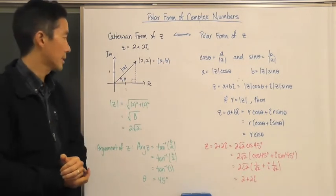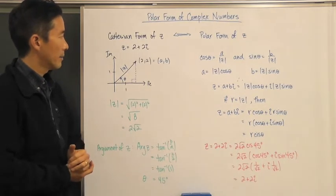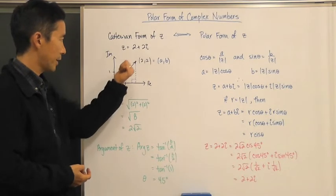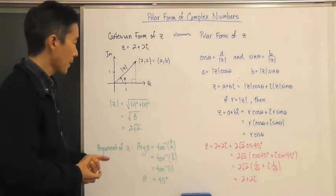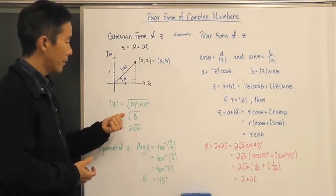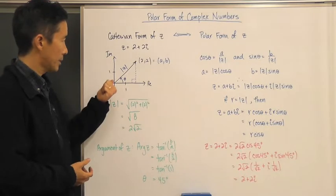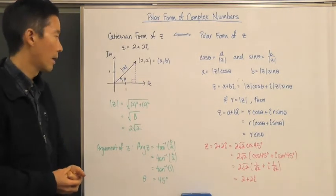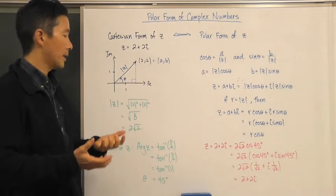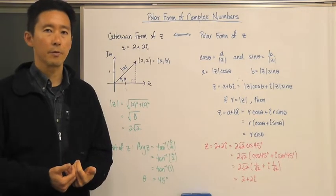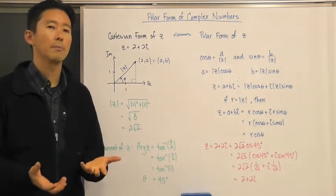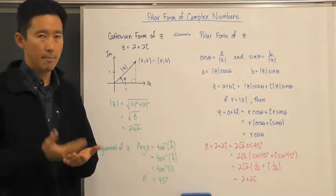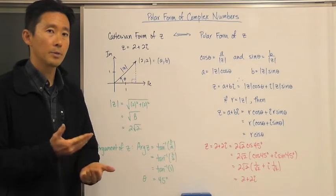In previous exercises we've looked at the modulus of this vector, or the magnitude of the vector. What we know is that this particular vector is going to have a modulus of 2 root 2. That's going to be an important characteristic because our interpretation of a complex number is as a vector, and a vector has a magnitude or length as well as a direction.